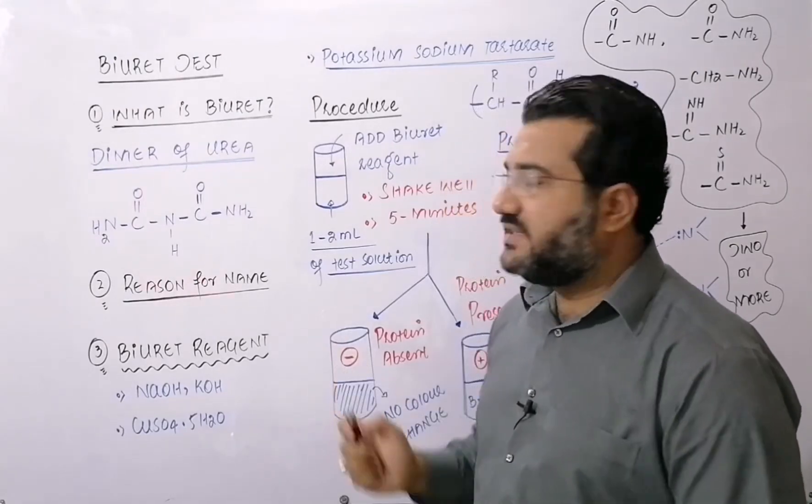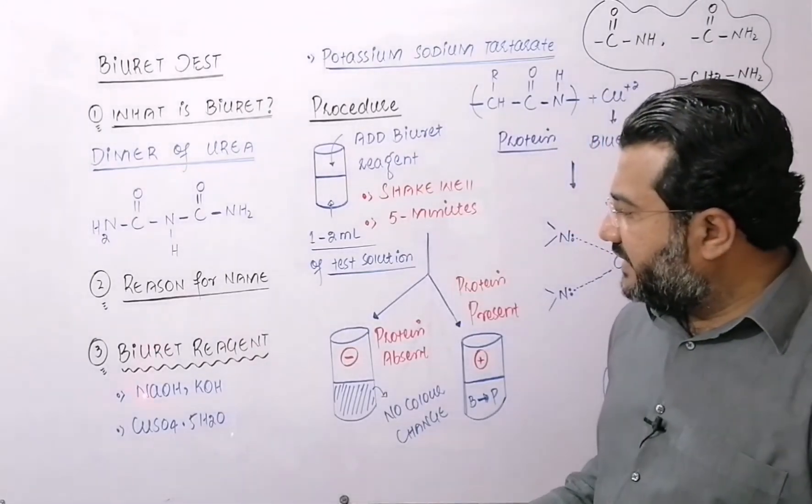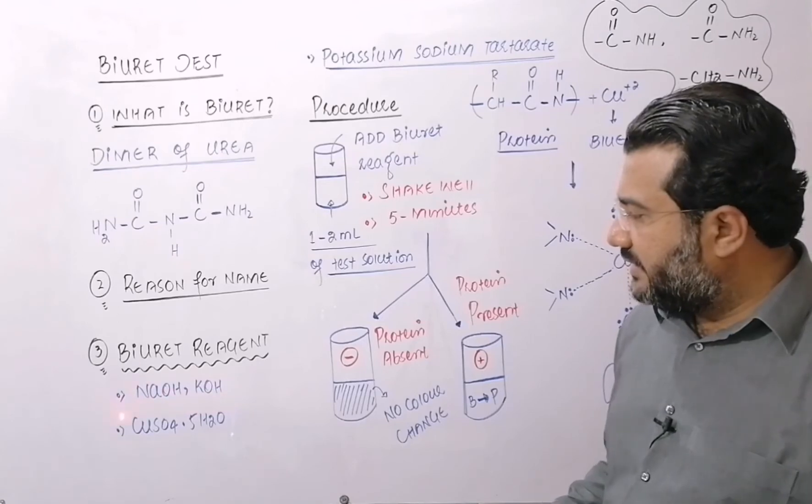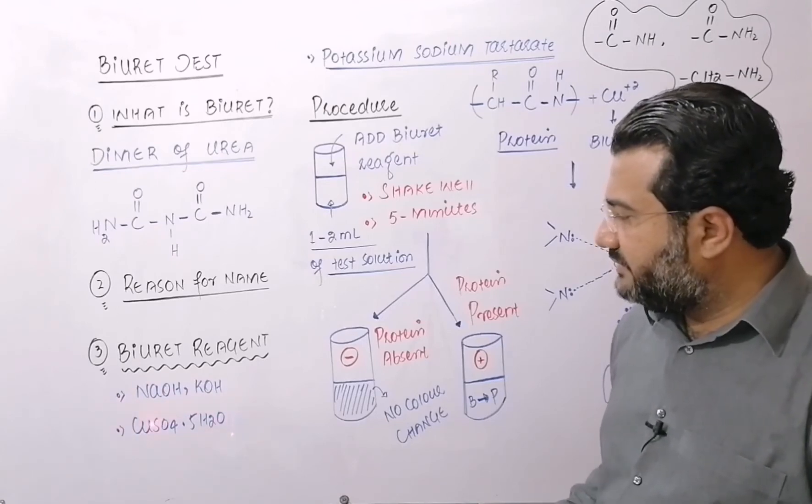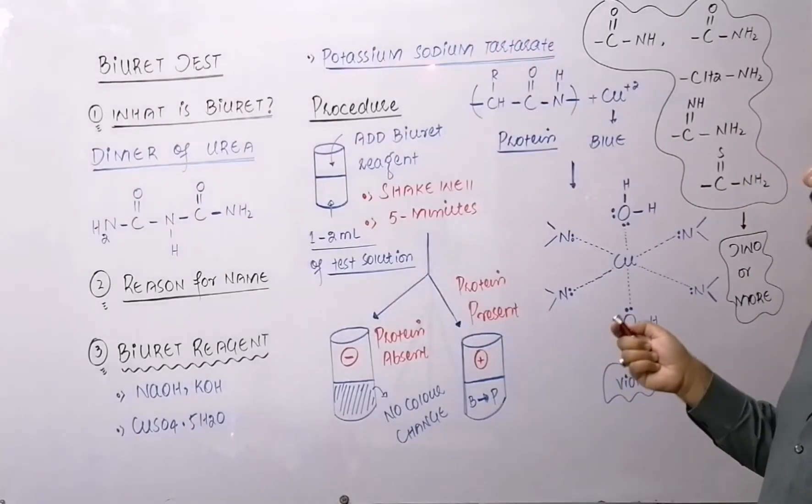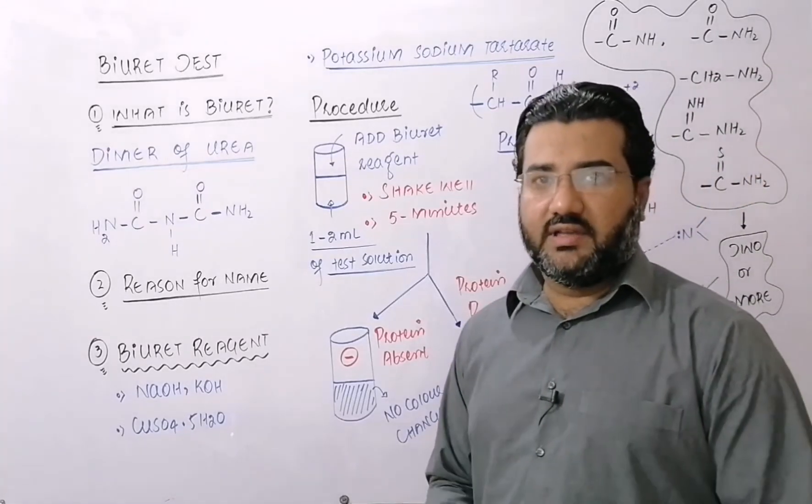So that's why this test is called the biuret test. What is the biuret reagent? That is an alkali, may be aqueous NaOH or aqueous KOH, hydrated copper sulfate which is blue in color, and the potassium sodium tartrate which is basically used for the stabilization of the cupric ions and to form the chelate or ring complex.